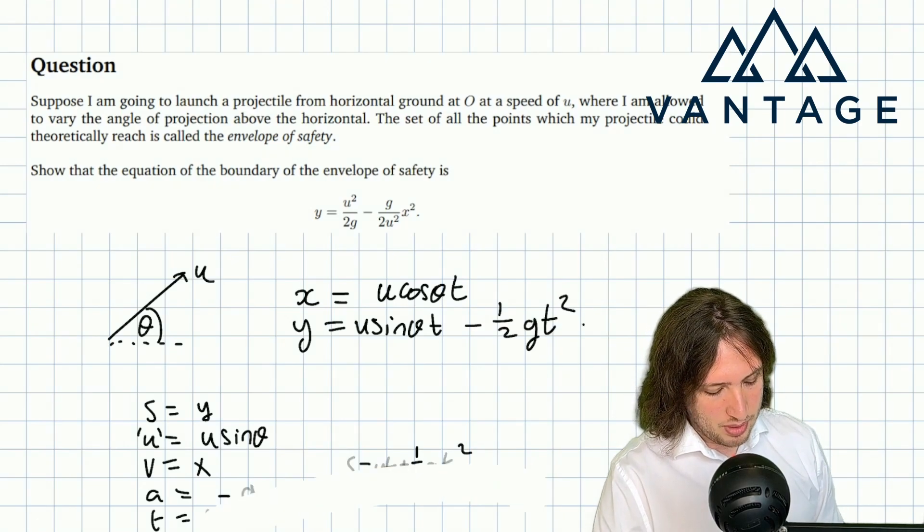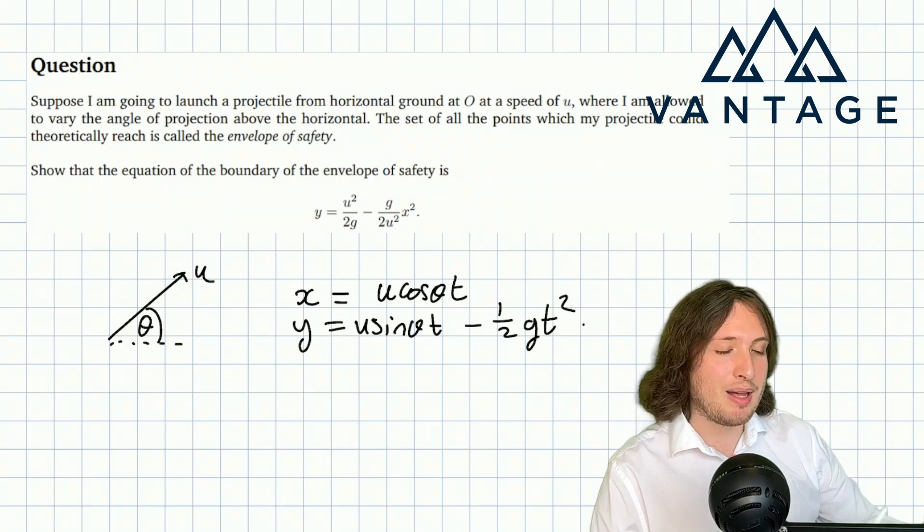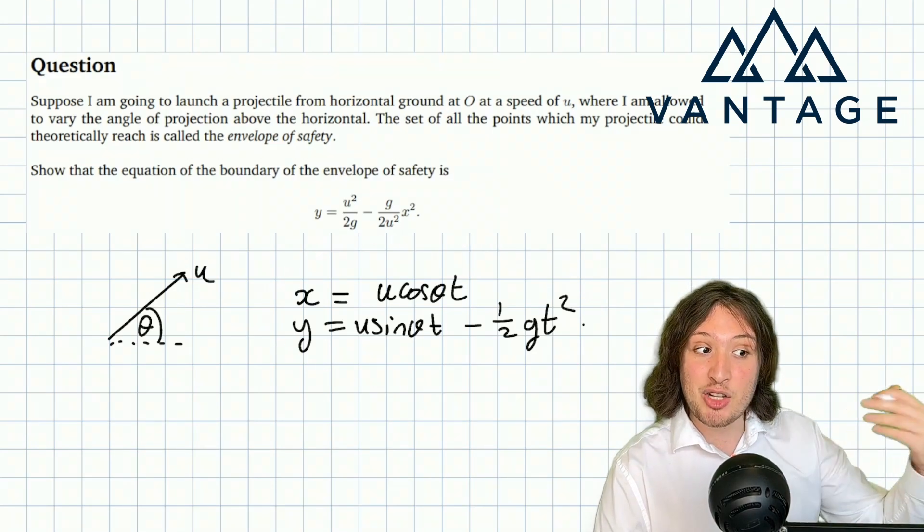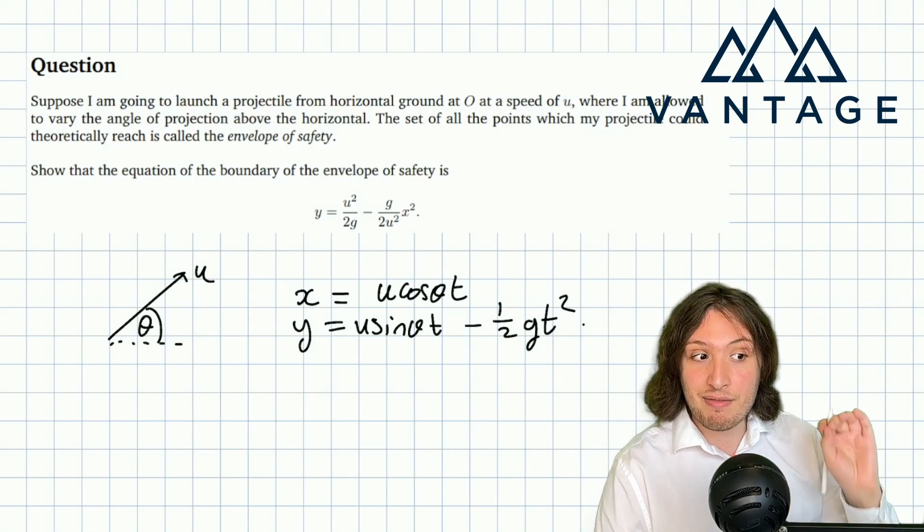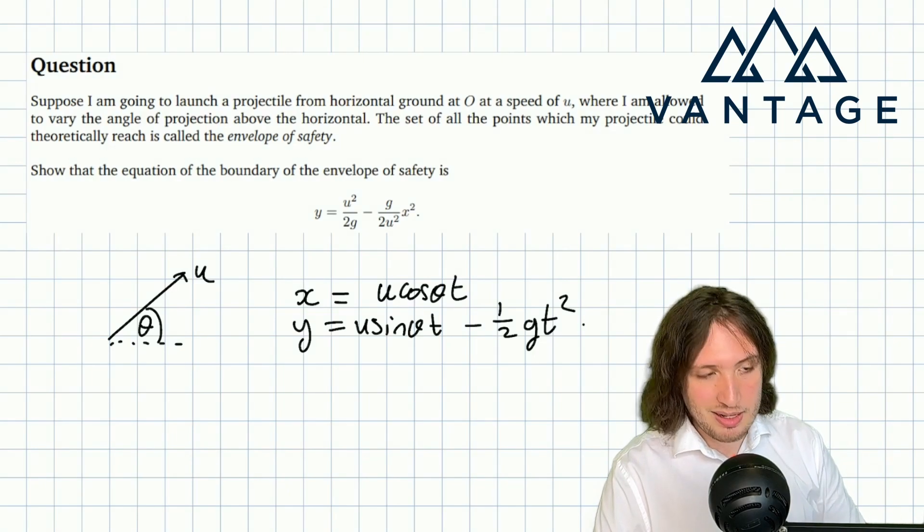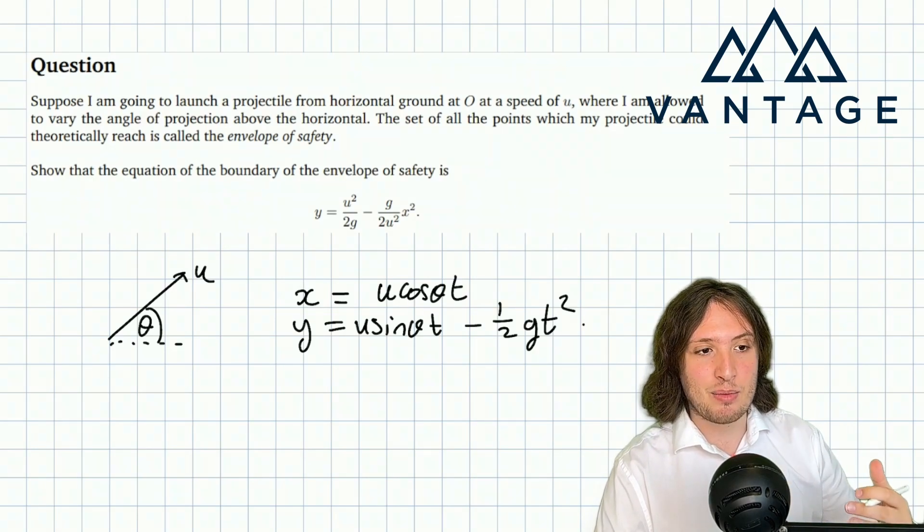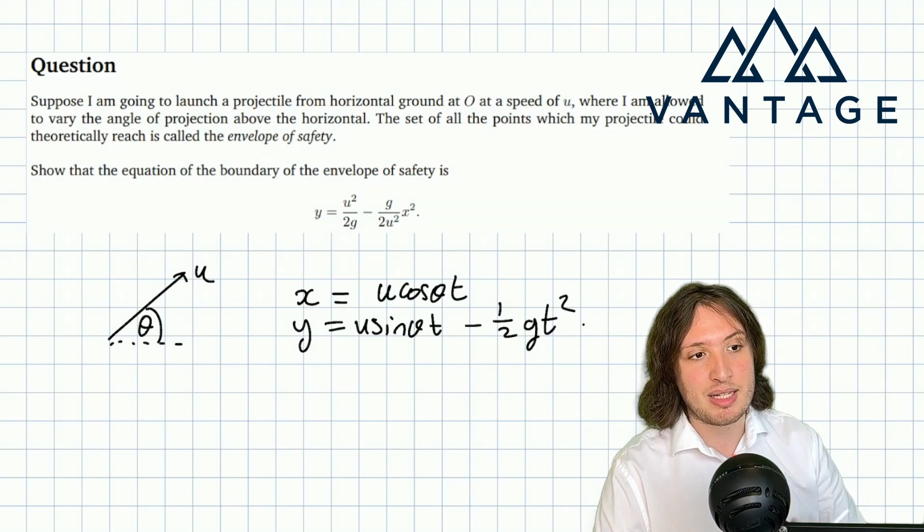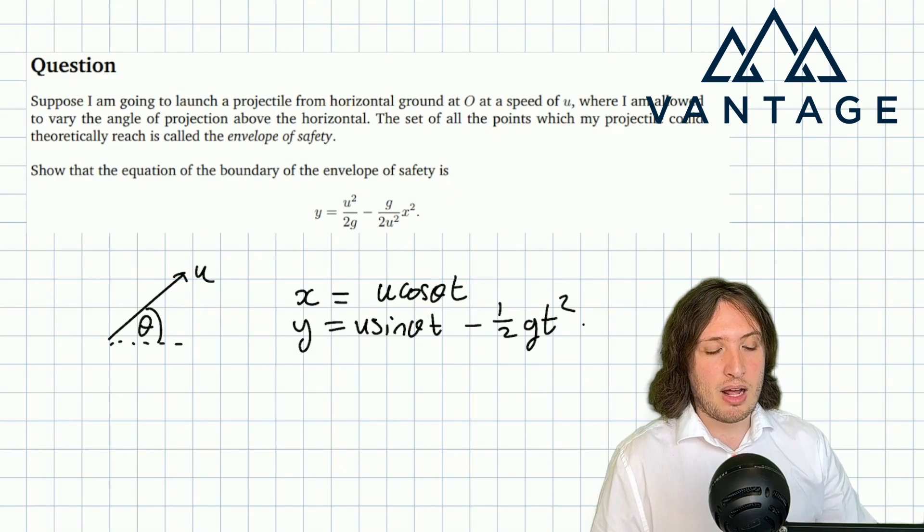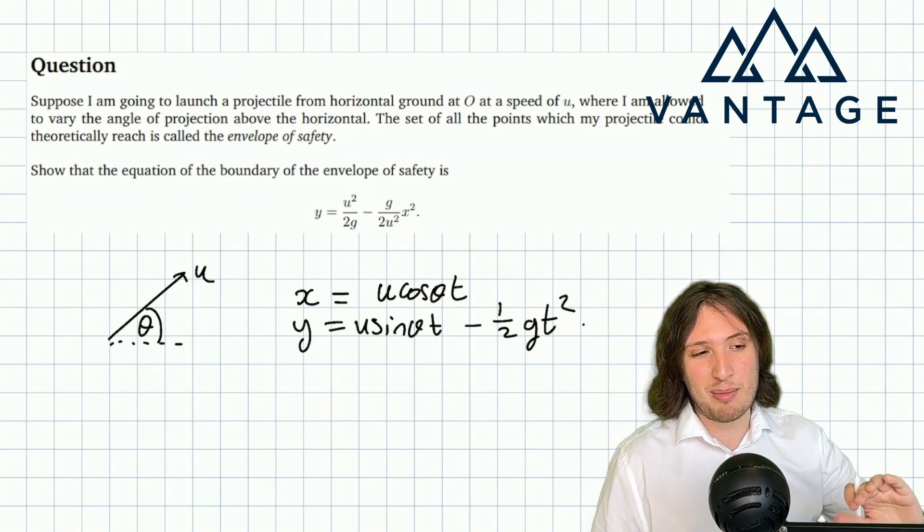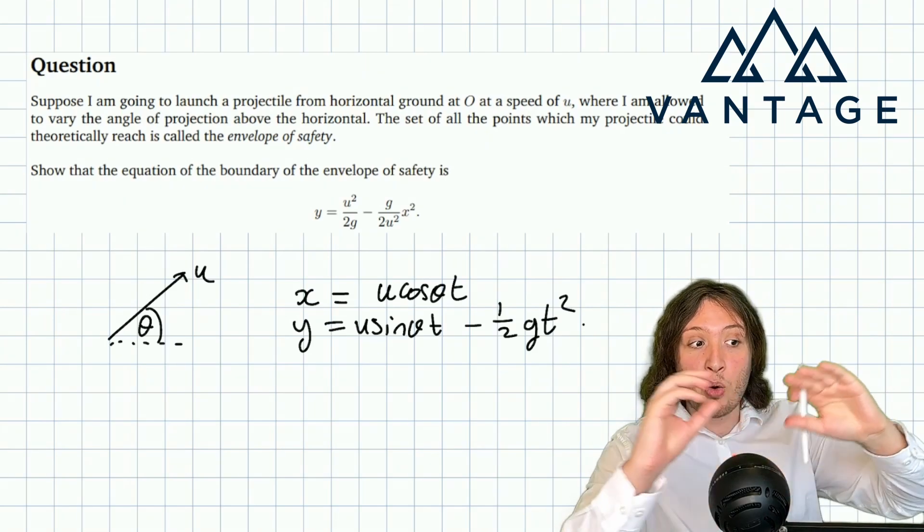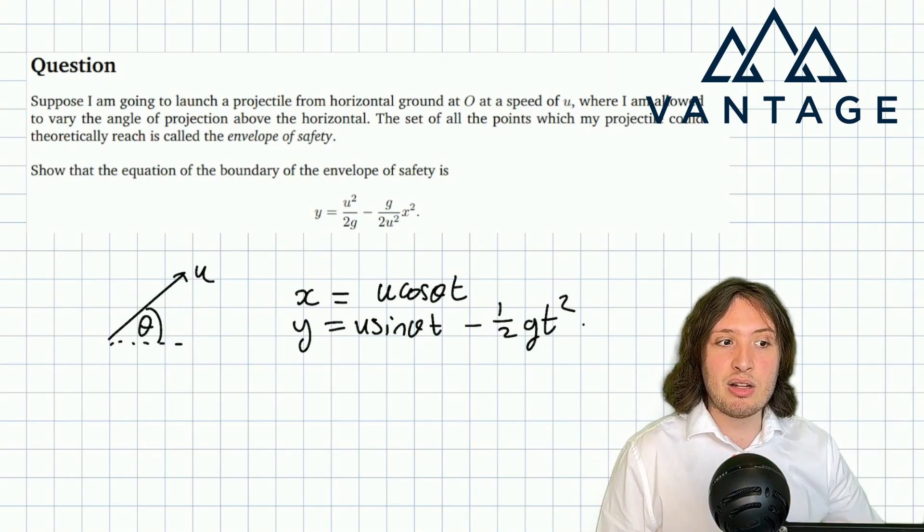I'll choose the SUVAT equation that doesn't involve v, so that is s equals ut plus half at squared to see that y equals u sin θ t minus half g t squared. These are parametric equations in parameter t. I'm not that interested in t because I'm not looking at a specific moment in the motion—I'm interested in the whole of the motion.